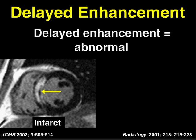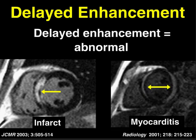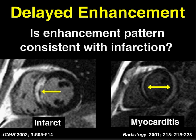You can get contrast enhancement as a result of either acute or chronic infarction, but you can also get contrast enhancement as a result of a variety of infectious and inflammatory processes. So the key thing when you see enhancement on these images is to ask the question: is the pattern of enhancement consistent with myocardial infarction, or is it more suggestive of a non-ischemic process?